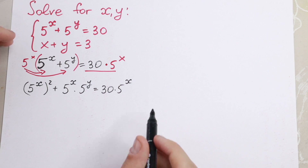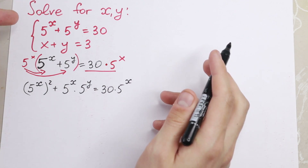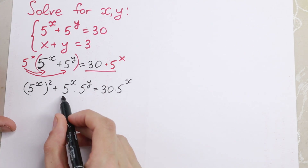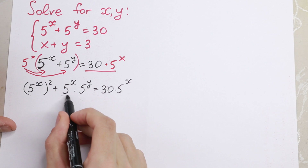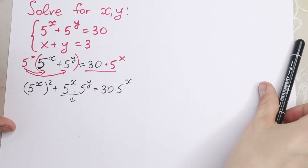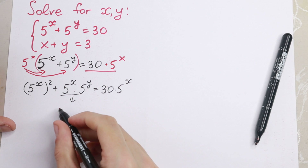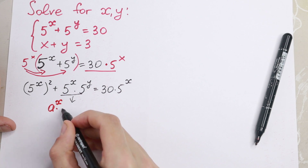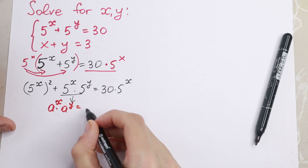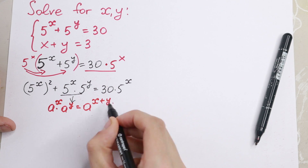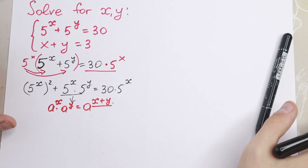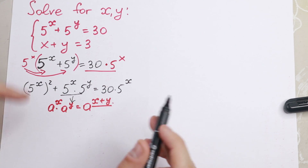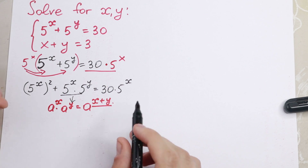So we just multiply both sides — nothing changed; of course we can cancel it in reverse, but I want to multiply both sides. And take a look — a really interesting moment — because right here we have the same base and different powers. If we multiply, we get that a to the power x times a to the power y equals a to the power x plus y. So we can add our powers. This is our formula: same base, with a equal to 5. So we can use this approach.